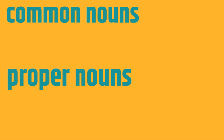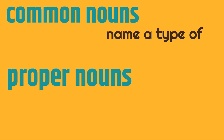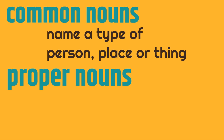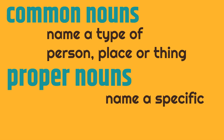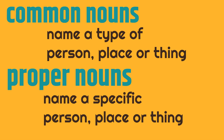So first, common nouns. Common nouns name a type of person, place, or thing. What about proper nouns? Proper nouns name a specific person, place, or thing. So a common noun names a type of person, place, or thing, and proper nouns name a specific person, place, or thing.